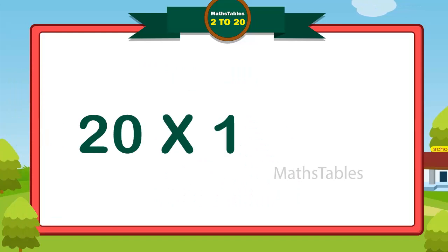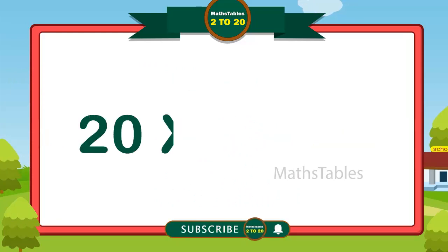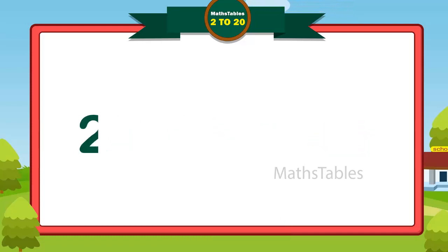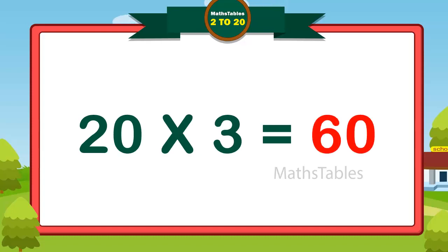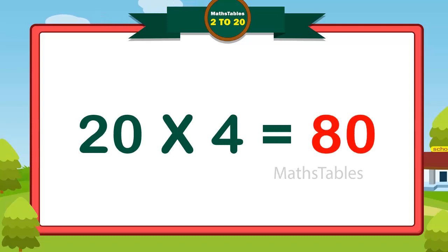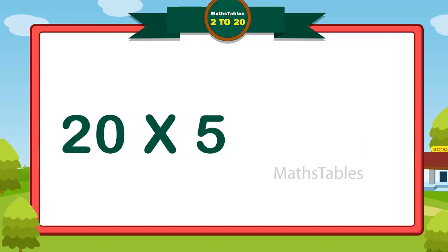20×1 is 20, 20×2 is 40, 20×3 is 60, 20×4 is 80.